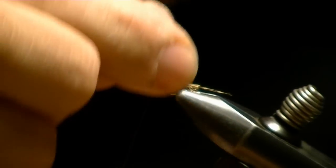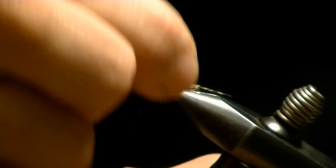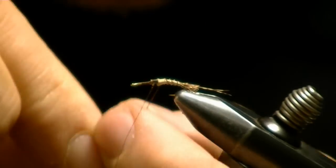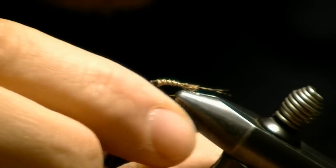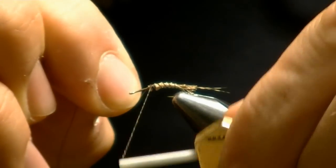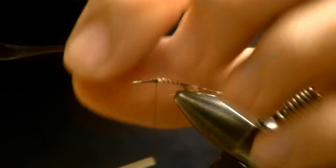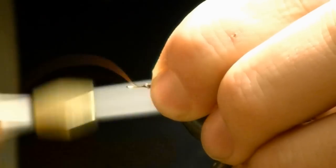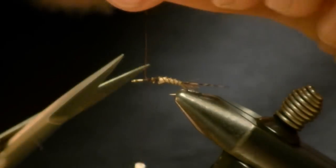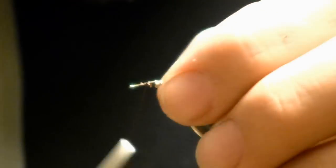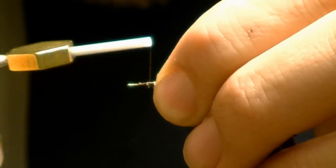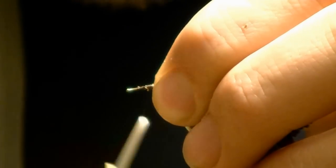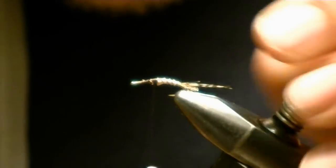I'm going to reverse wrap my copper wire, my brown copper wire. Tie it off. Clip it. I'll move my thread back.